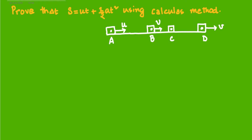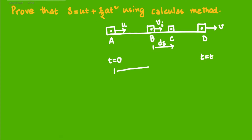At the point B, the instantaneous velocity of the body will be Vi. The displacement of the body from B to C is ds, which is a very small displacement. At the point A, the value of time is t equal to 0, and at the point D, the time is t. The total displacement of the body from A to D is s.